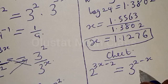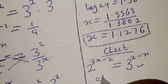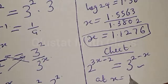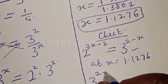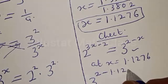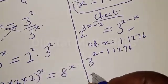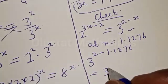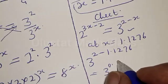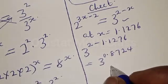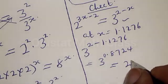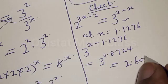Let's consider the right-hand side first, at x equal to 1.1276. We have 3 raised to power 2 minus 1.1276, which is equal to 3 raised to power 0.8724, which is equal to 2.608. That is our right-hand side.